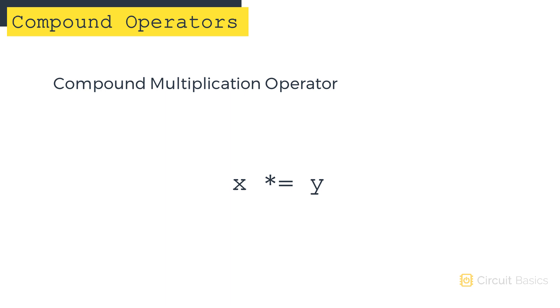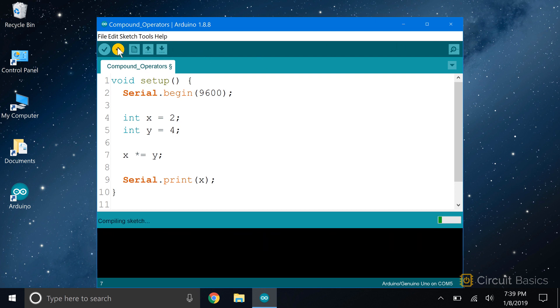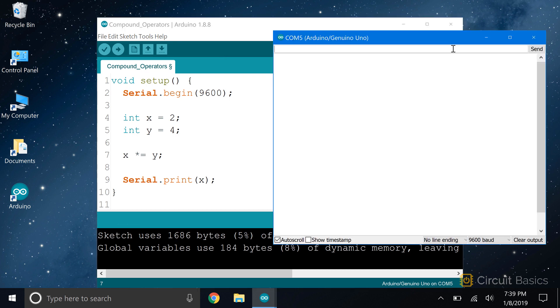Then there's a compound multiplication operator. The compound multiplication operator is written with an asterisk and an equal sign. It takes a variable and multiplies it by another variable, then stores the result in the first variable. It's the same as writing x equals x times y. So if I change this to x times equals y, the result should be 2 times 4, or 8. And yep, that's what we get.